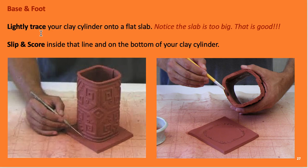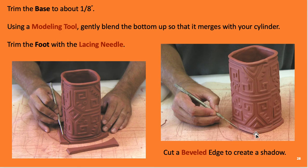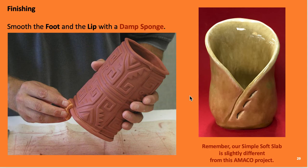Work on the base and foot: lightly trace your cylinder onto a flat slab — the slab being too big is fine. Slip and score the inside on that traced line and the bottom of your cylinder. Trim the base about an eighth of an inch with the modeling tool and blend it up so it merges with your cylinder. Trim the foot with the lacing needle, keeping it about a quarter to an eighth of an inch bigger, then blend it in and cut a little beveled edge underneath to create a shadow that looks like a foot.